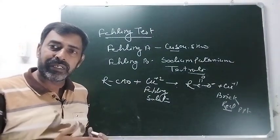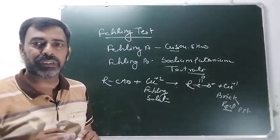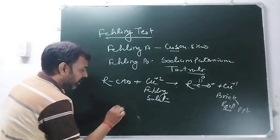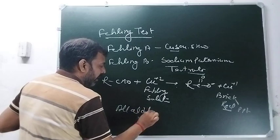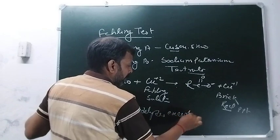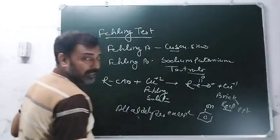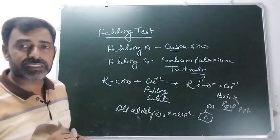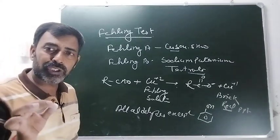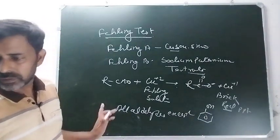क्या Fehling test भी Tollens की तरह सारे aldehydes और methanoic acid की testing देता है? Surely it does not give the testing of methanoic acid, neither does it give the testing for benzaldehyde। तो यहाँ पर सिर्फ all aldehydes except benzaldehyde के लिए है। Benzaldehyde को छोड़के सारे aldehydes के लिए है और methanoic acid के लिए नहीं है। Methanoic acid की testing सिर्फ और सिर्फ Tollens से की जा सकती है।